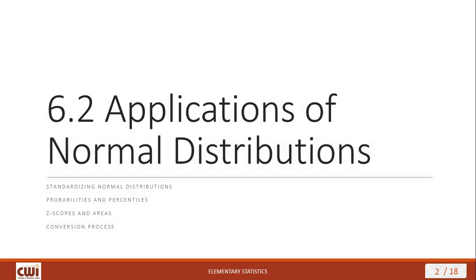First, we'll look at the process for standardizing normal distributions, which we more or less covered in the last lecture, but we're going to get into it more specifically in this one. Then we'll look at how to calculate probabilities and percentiles for specific instances, and then we'll get into a discussion of z-scores and areas, and finalize our lecture with a discussion of the conversion process.